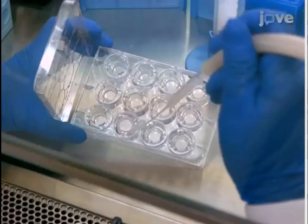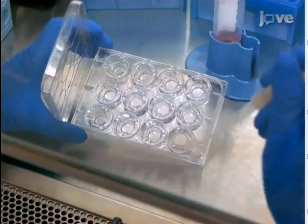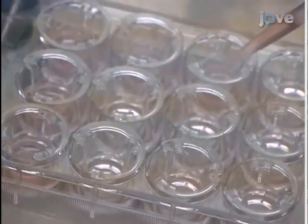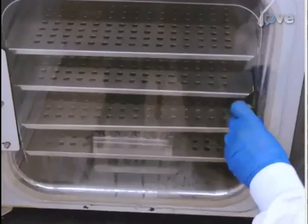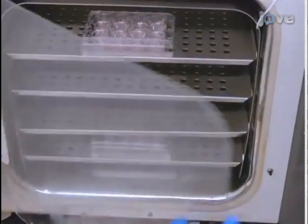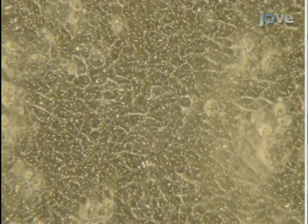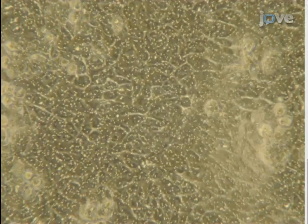Transfer the plates to the tissue culture incubator. To maintain the cell cultures, change the media every other day. Use BEGM ALI media: 700 microliters for the basal compartment and 200 microliters for the apical compartment. Inserts have to be maintained submerged until cells are totally confluent. Two to six days after seeding on tissue culture inserts, the cells should be completely confluent with no holes visible in the monolayer.